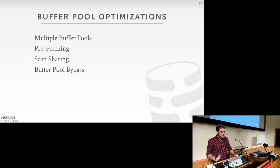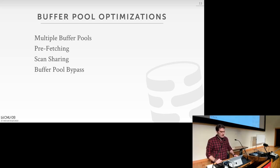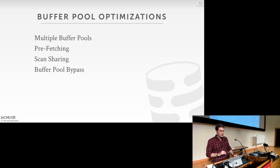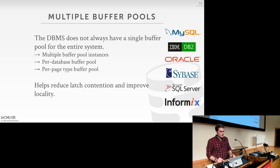Some of the buffer pool optimizations we're going to talk about: we'll start with simpler ideas and move to more complex ones — using multiple concurrent buffer pools rather than just one, using different prefetching techniques, scan sharing across multiple queries, and using a buffer pool bypass mechanism for individual queries. We'll start with the multiple buffer pools idea.